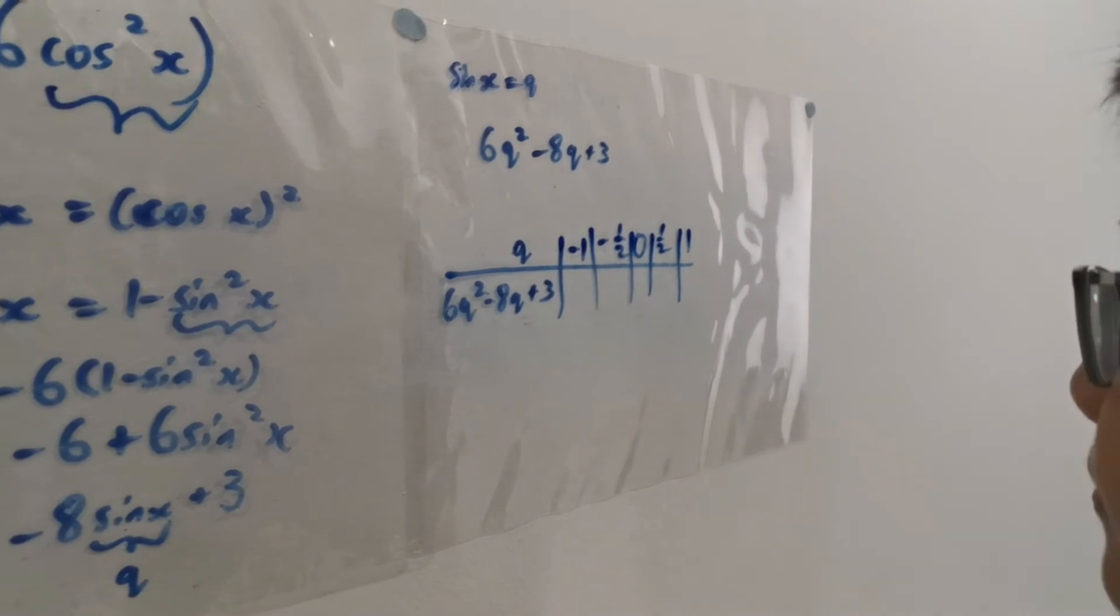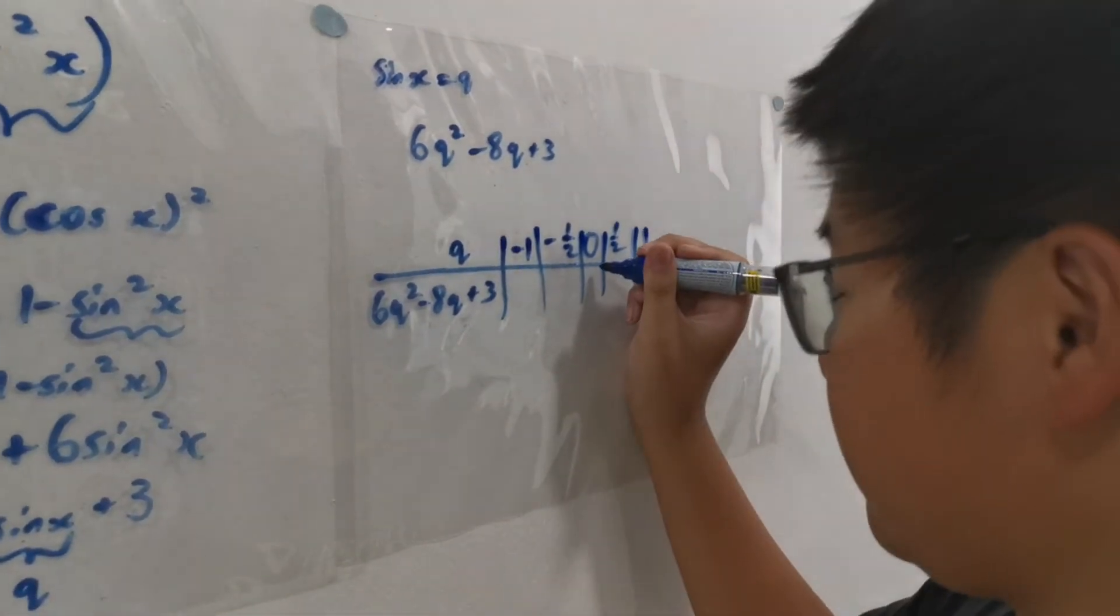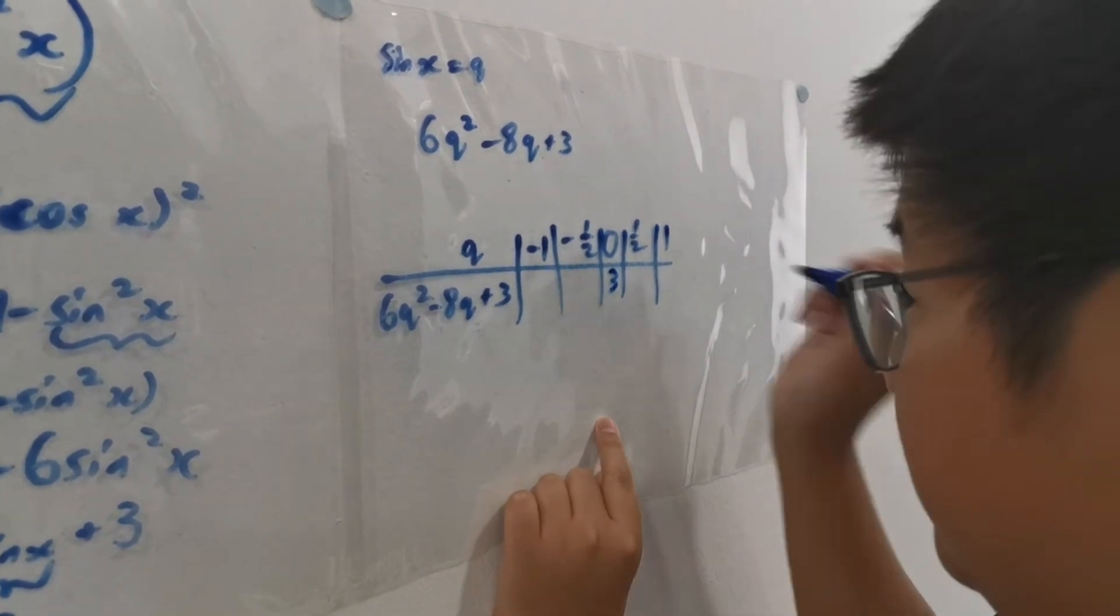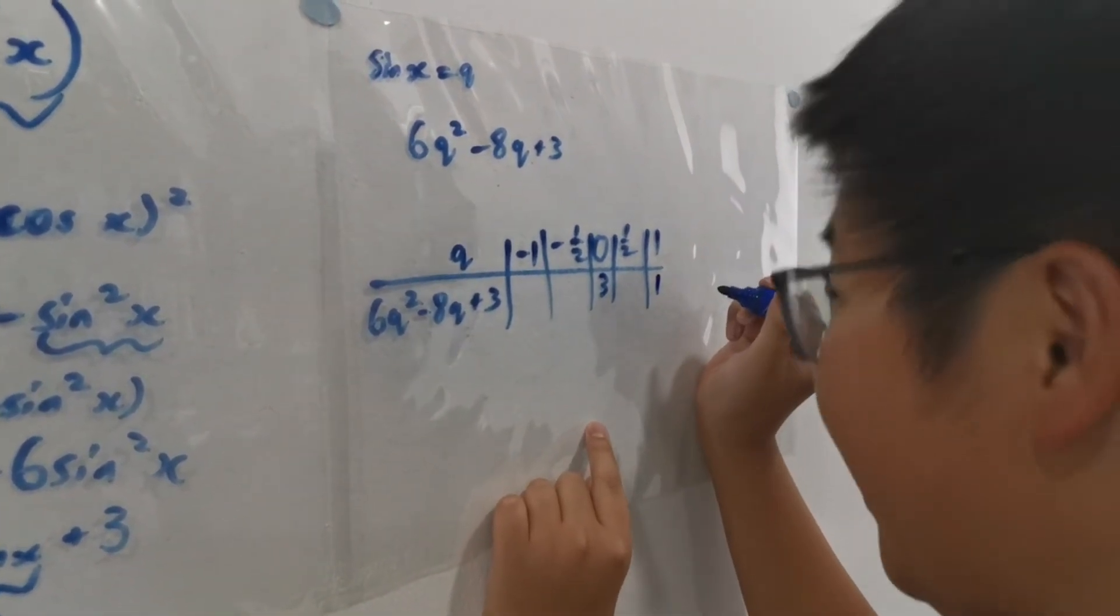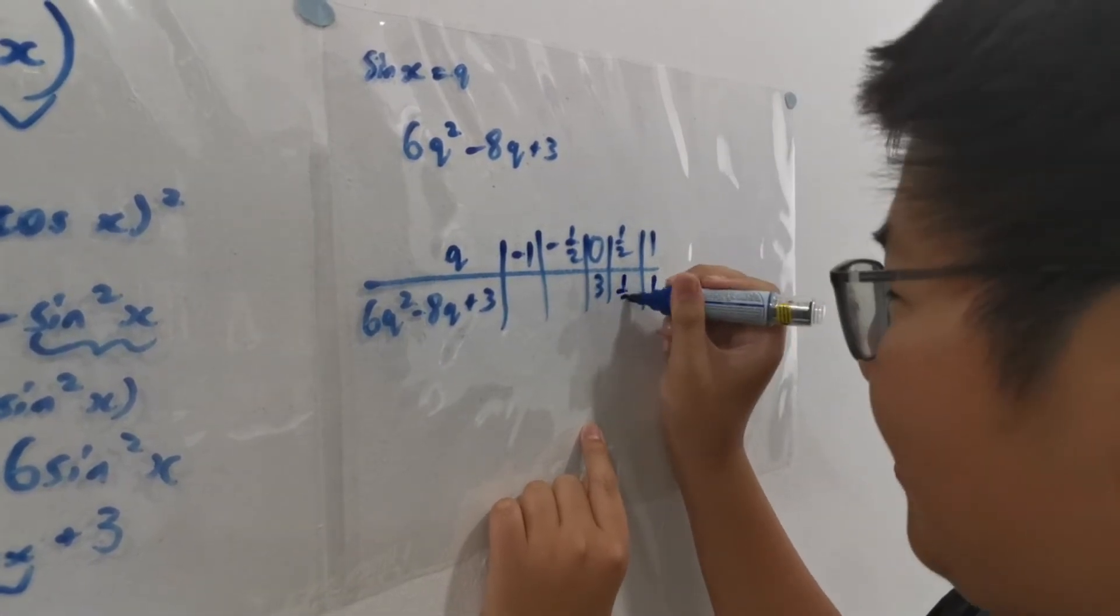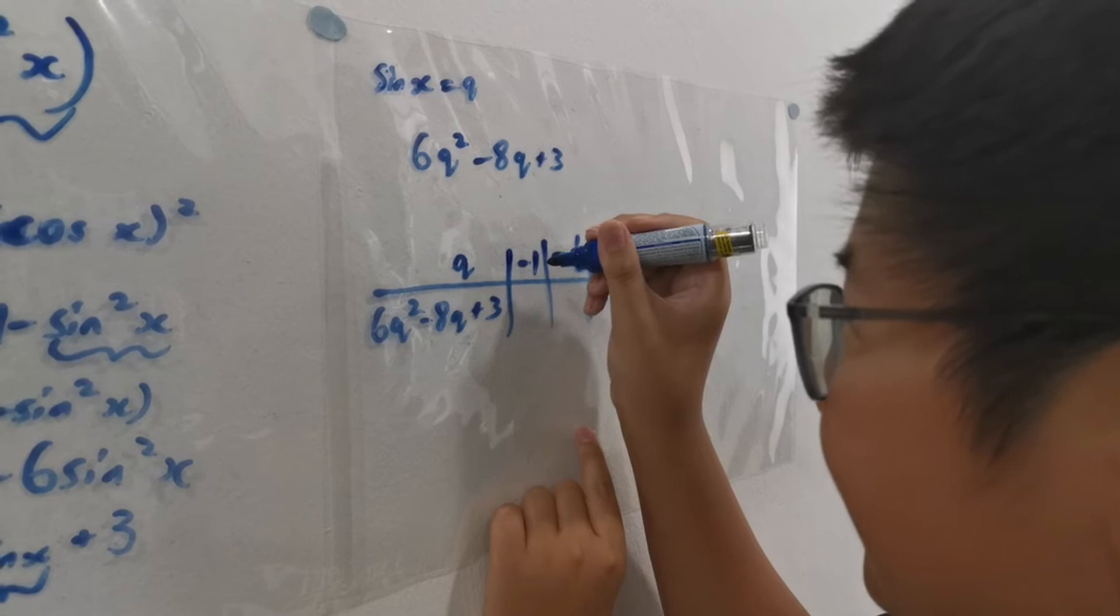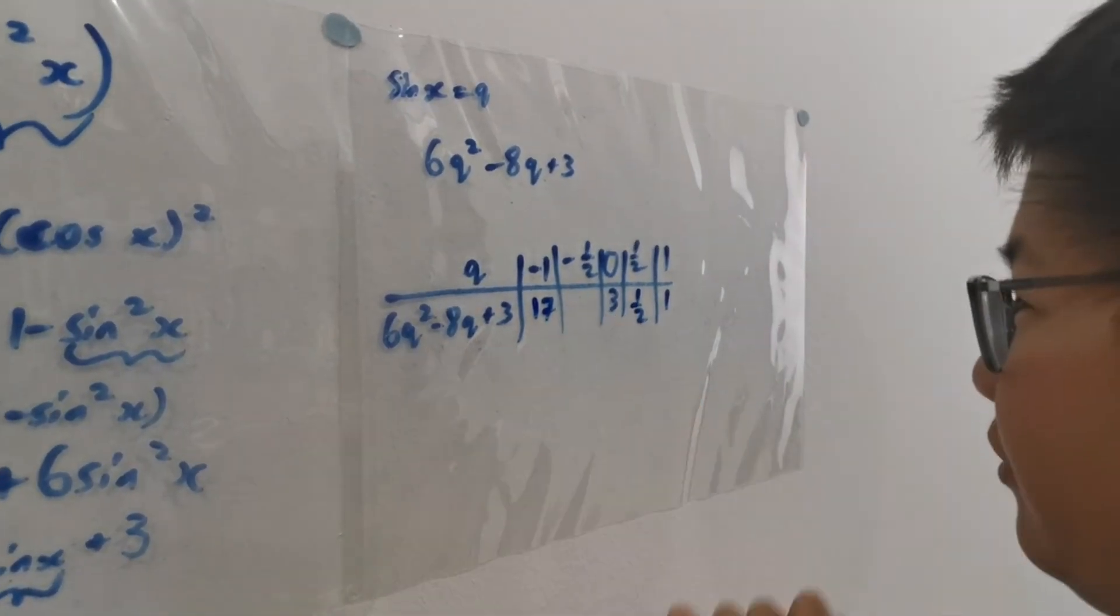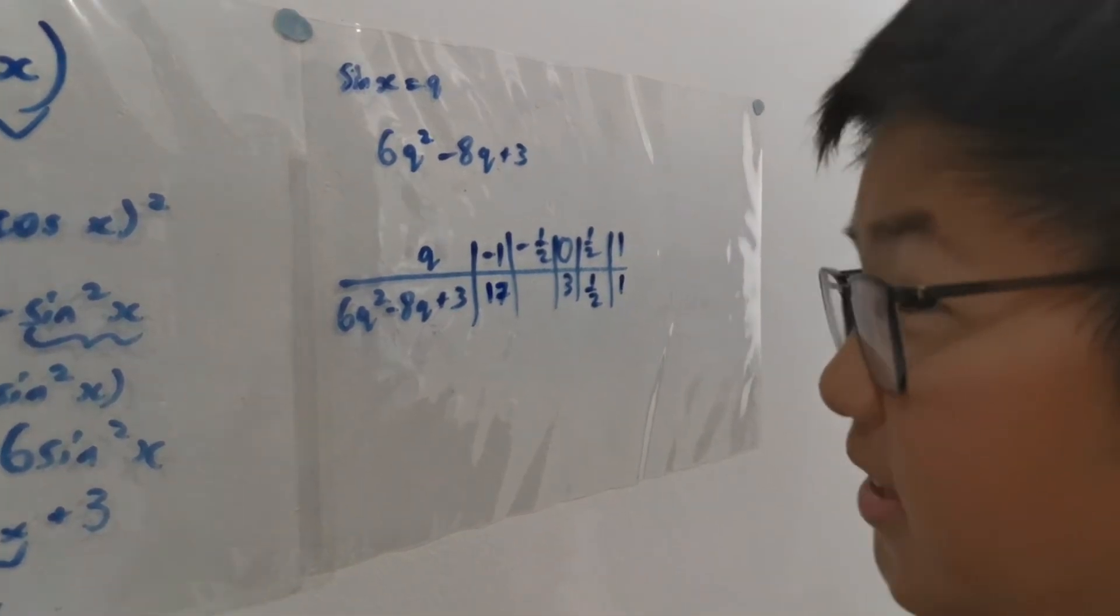Let's write in some values. At 0, this expression is 3. At 1, this expression is 1. At half, this expression is, wait for it, half. At minus 1, this expression becomes 17. We won't need to write down the value for minus half since we got the general shape of it.